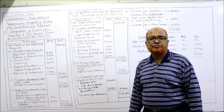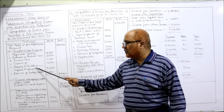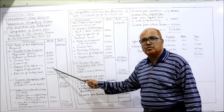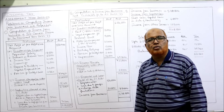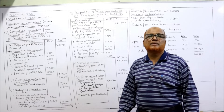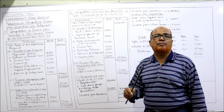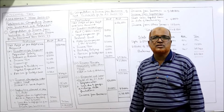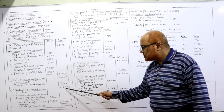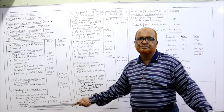Now we make the deductions allowed as per IT rules. First, depreciation on capital expenditure on repair of the building: we disallowed 32,000 but the Income Tax Act allows 10% depreciation on it — 10% of 32,000 = 3,200 is allowed. Second, from the additional information, there is a loss of 4,000 due to negligence of an employee. The Income Tax Act says this is a revenue loss and is allowed as deduction. Total deductions: 3,200 + 4,000 = 7,200. Subtract: 6,13,850 minus 7,200 = 6,06,650 — this is the income from business.